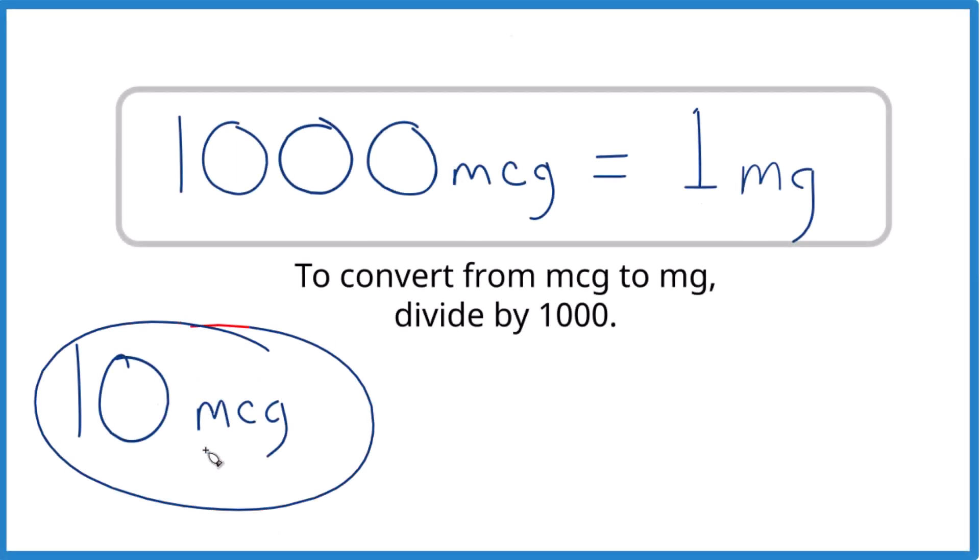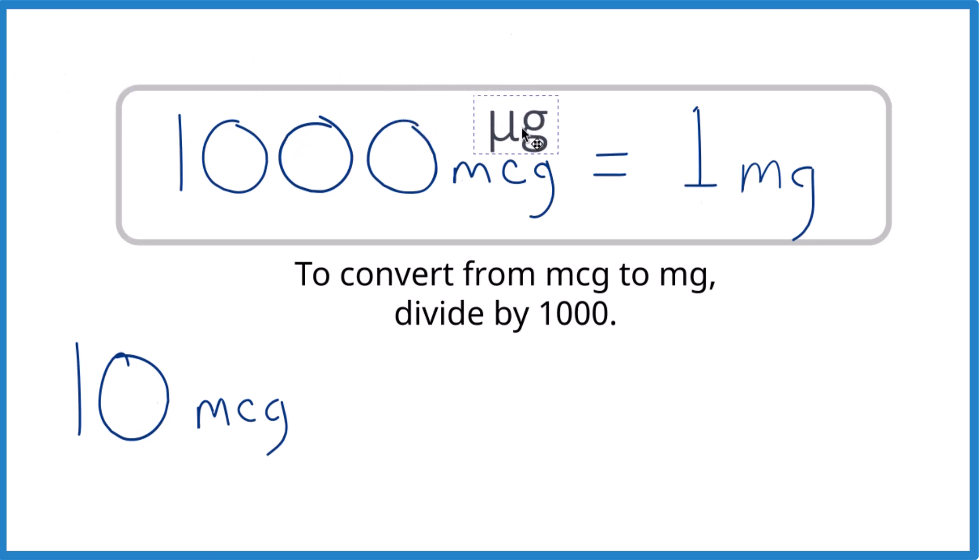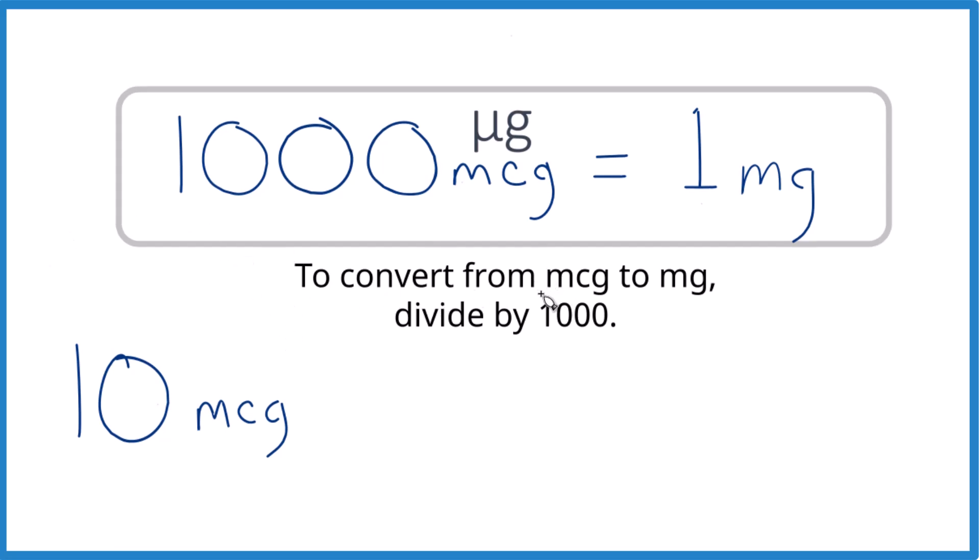Let's convert 10 micrograms to milligrams. We know that we have 1000 micrograms in 1 milligram. Sometimes you'll see micrograms written as mcg like this, you might see that as well, same thing. When we go from micrograms to milligrams, we're going to divide by 1000.